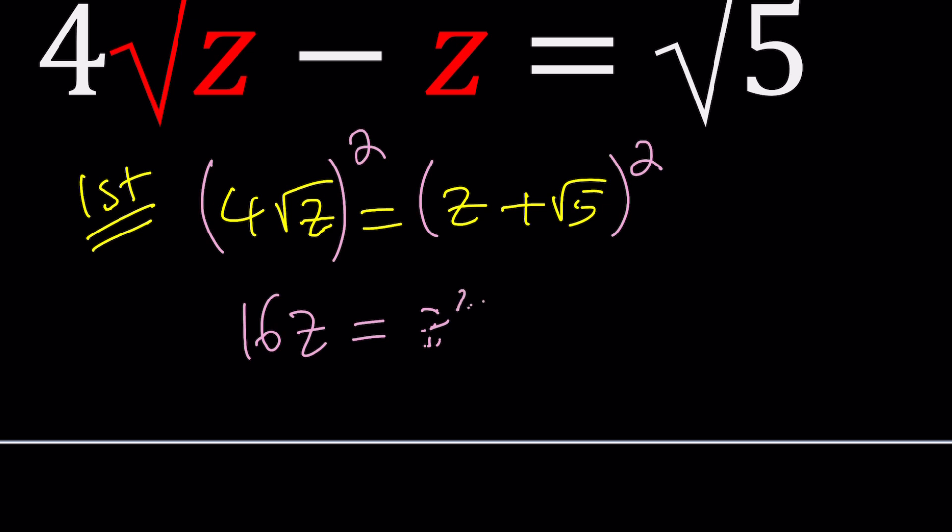Yeah, sometimes the static electricity, the pencil, or notability, I don't know what goes crazy. Something goes crazy. This becomes z² + 2√5z + 5, okay?